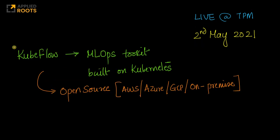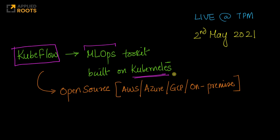For those of you who don't know, Kubeflow is a very popular open-source MLOps toolkit or ML productionization toolkit which you can use to build machine learning pipelines end-to-end. Kubeflow itself is built on Kubernetes, which is a very popular orchestration system for containers like Docker. Kubeflow is designed and open-sourced by Google.